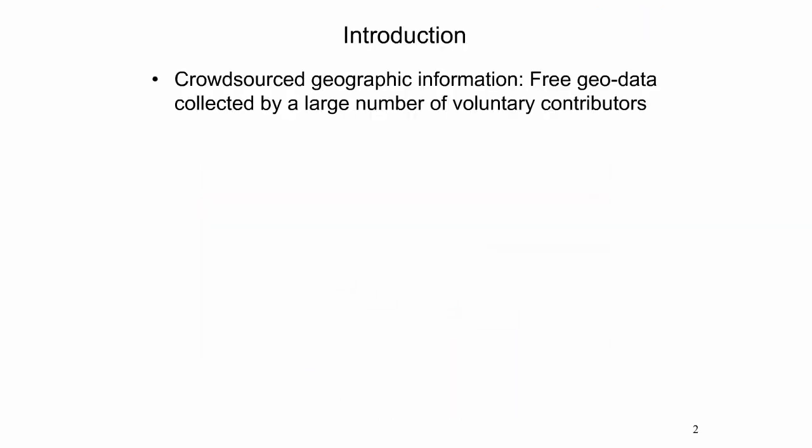Crowdsourced geographic information is user generated content contributed by a large number of volunteers. The collected GEO datasets are a free alternative to commercial datasets and governmental agency data. Crowdsourced geographic information is found and used in a wide range of disciplines including transportation, navigation, recreation, biology, wildlife ecology, natural resource management, and social science. This presentation provides an overview of crowdsourced geographic information and explains associated terminology.